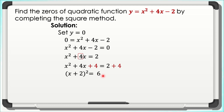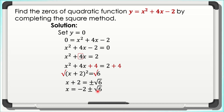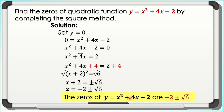We apply the square root property by extracting roots on both sides, giving x + 2 = ±√6. We then transpose positive 2 to the right side. So x = −2 ± √6. Therefore, the zeros of y = x² + 4x − 2 are −2 ± √6.